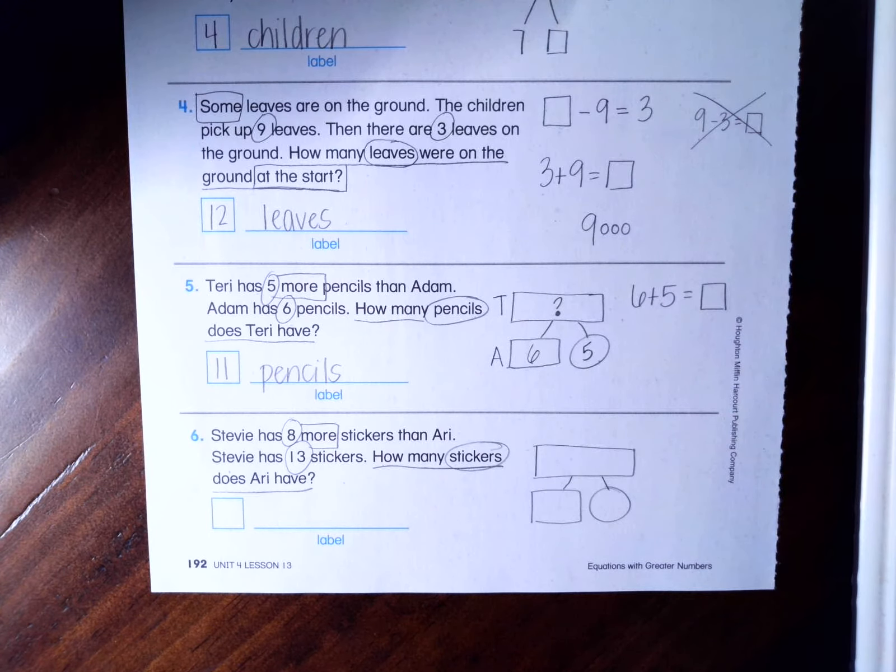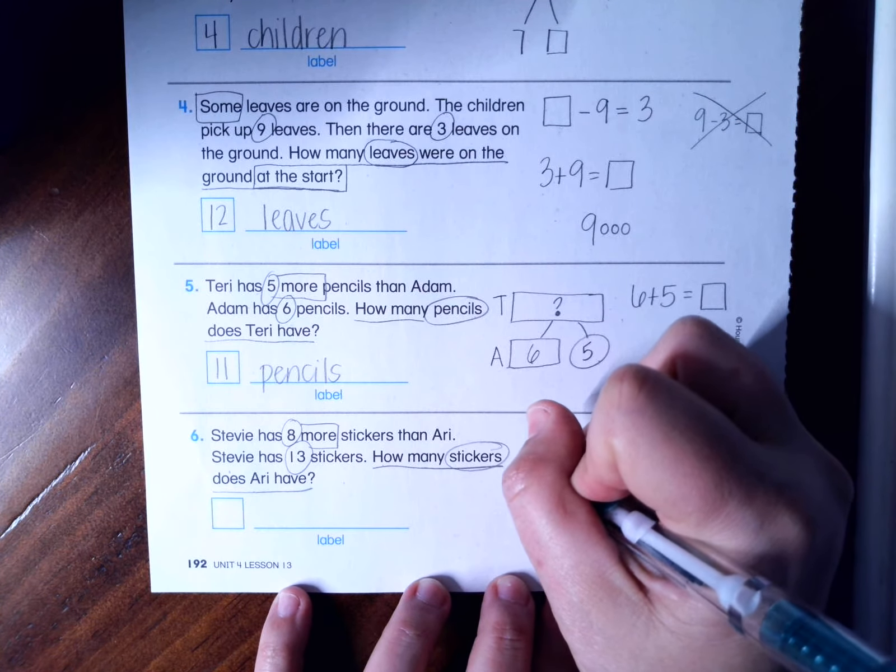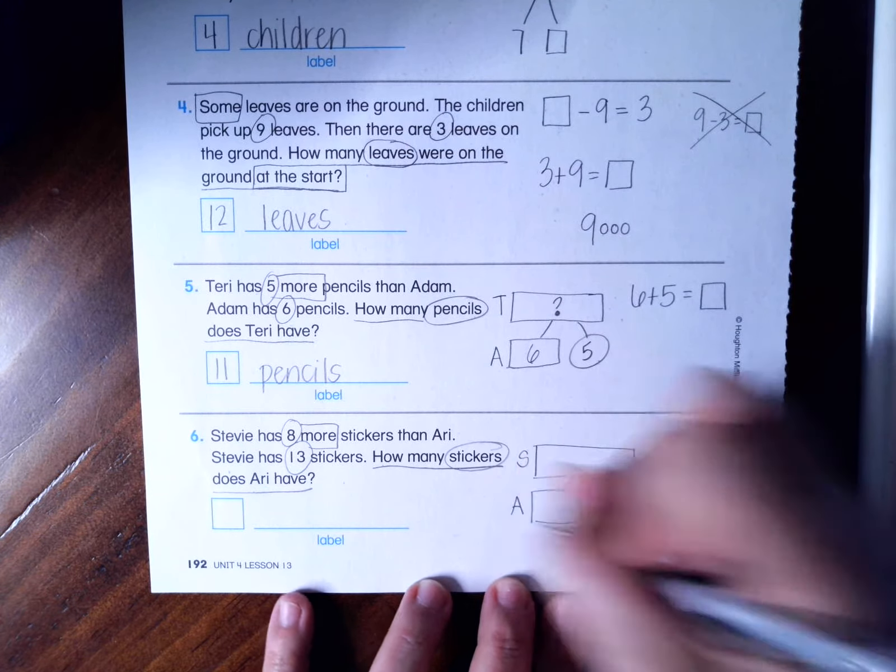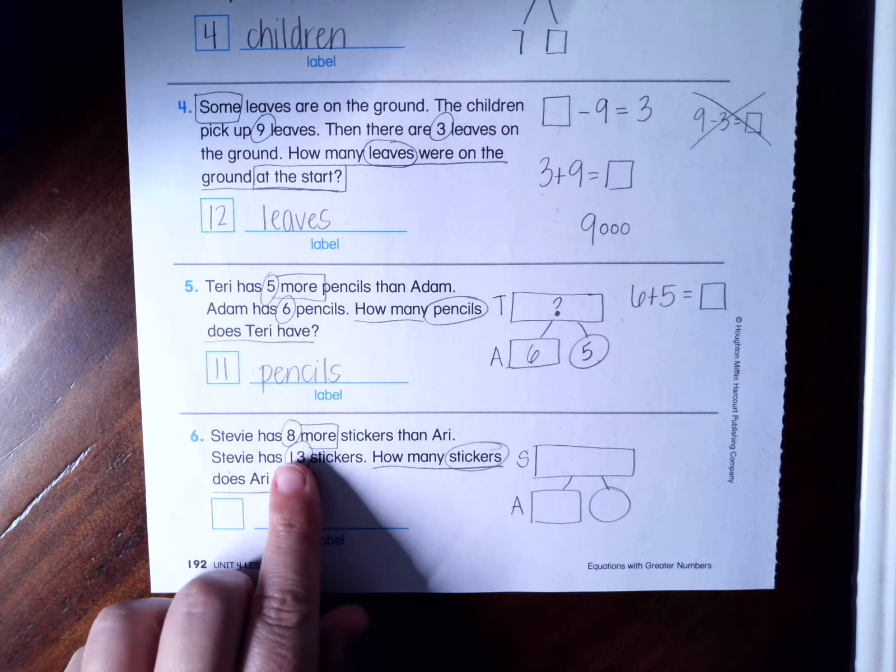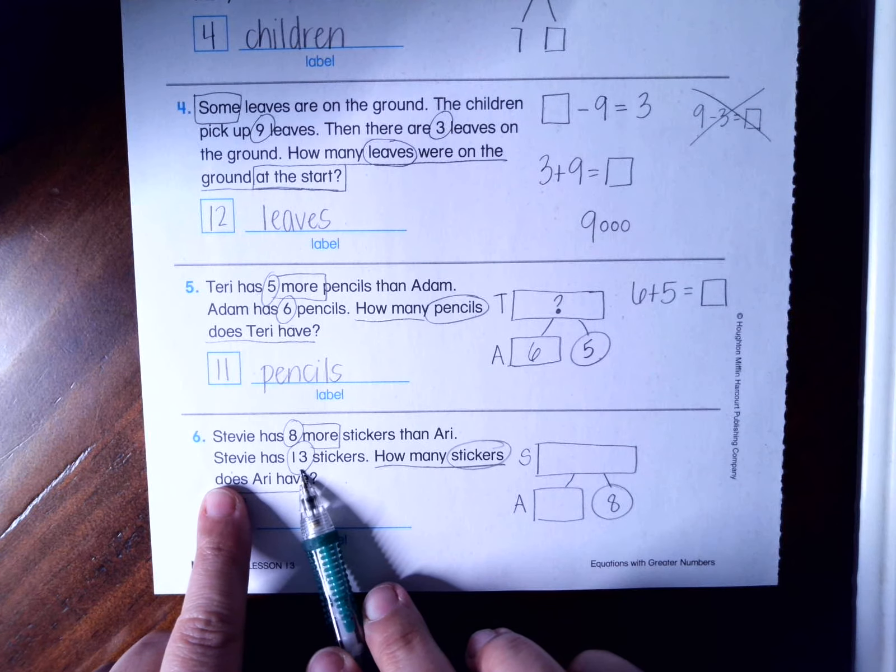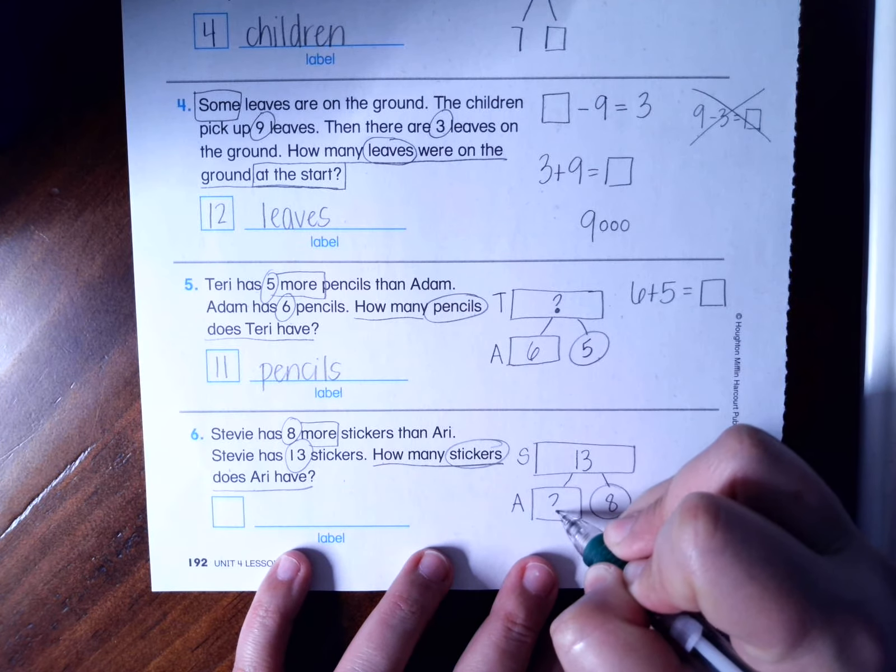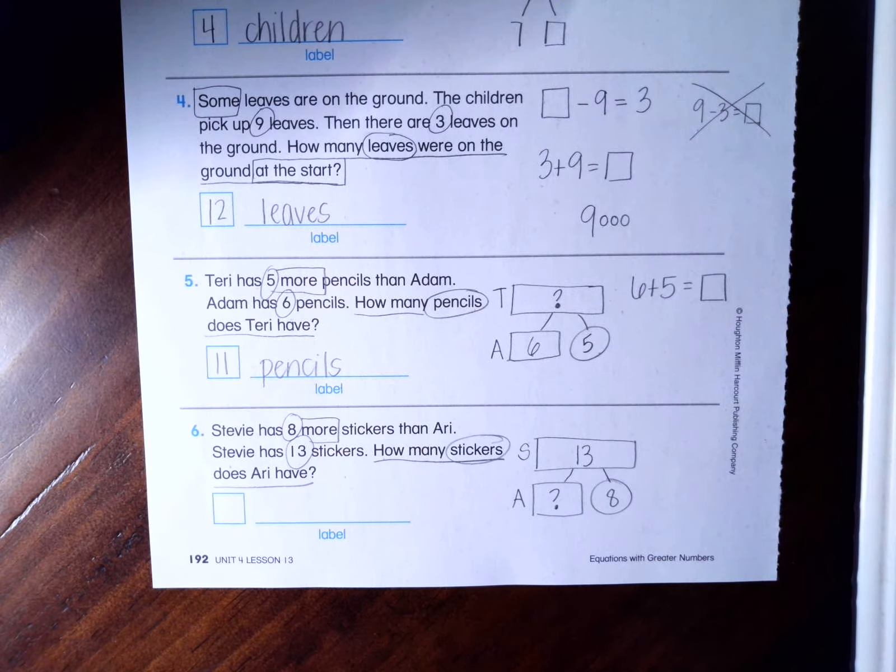It says Stevie has eight more than Ari. So Stevie has more. Ari has less. I see the number eight. That's going to go in my oval. I see that Stevie has 13. So that's going to go in Stevie's box. And I'm trying to figure out how many does Ari have?